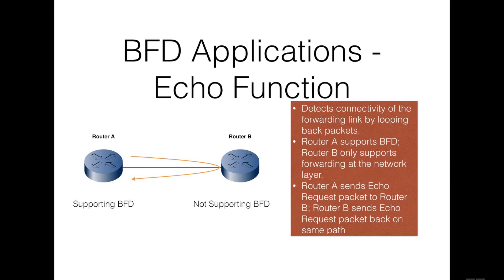Both BFD modes can make use of the BFD echo function. The BFD echo function detects connectivity of the forwarding link by looping back packets. In our example, Router A supports BFD but Router B does not — Router B supports only forwarding at the network layer. To rapidly detect forwarding failures between the two devices, the BFD echo function is enabled on Router A. Router A sends an echo request packet to Router B, which sends it back along the same path. Upon receiving the echo, Router A knows the forwarding link is up; otherwise it registers a forwarding link failure to Router B.